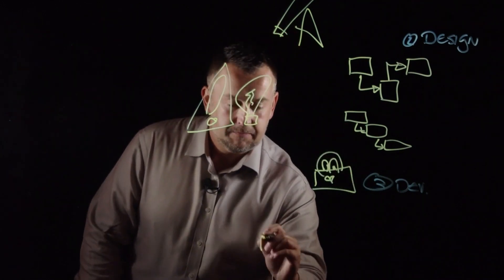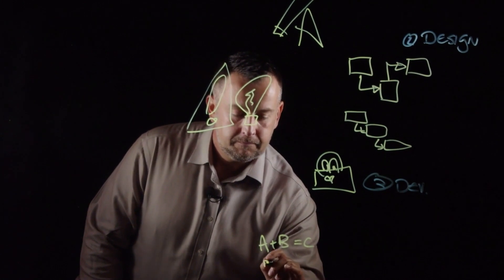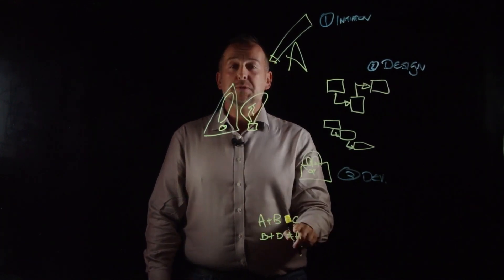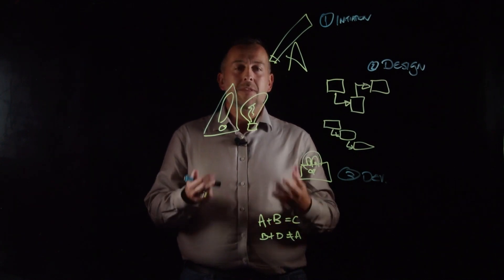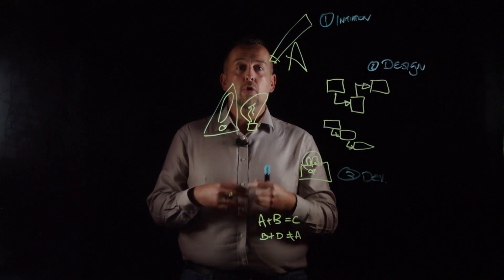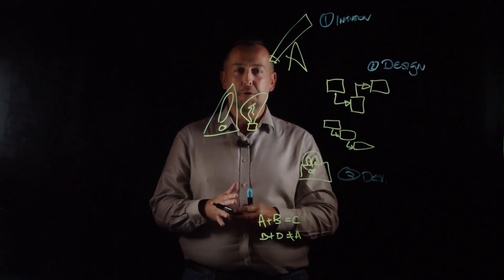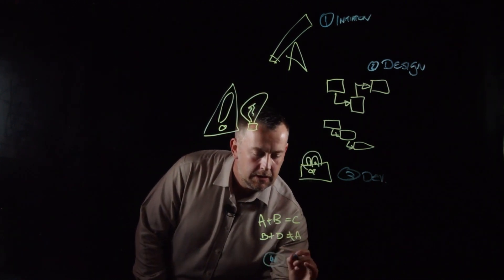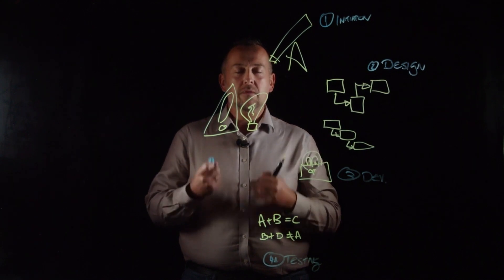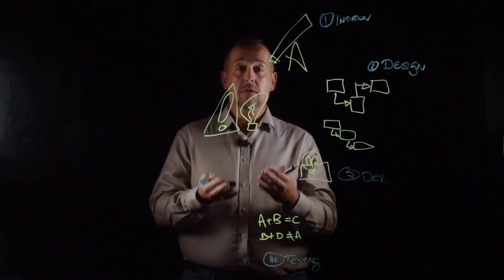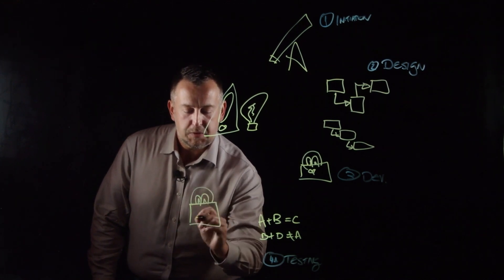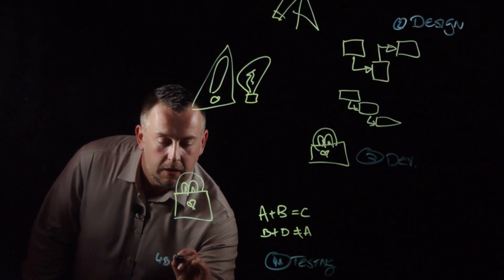The next step involves two testing phases. First is an internal process where we validate that the developer has understood your user stories, ensuring the project's deliverables are exactly what you're looking for — this is Step 4a, testing. Step 4b is user acceptance testing, one of the moments I really enjoy: this is where we get to share with you, the client, the resultant solution.